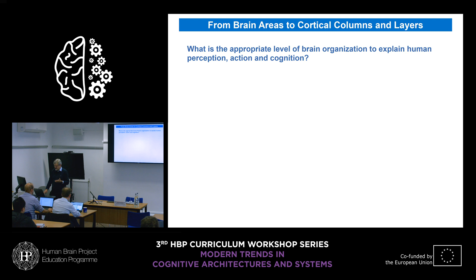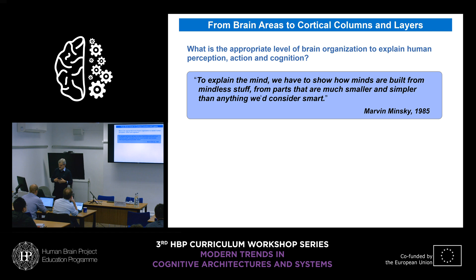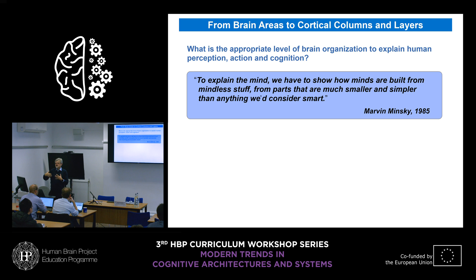This goes back to the question of what is the best or appropriate level to understand cognition and action. One of my heroes, Marvin Minsky, said in his book The Society of Mind: to explain the mind, we have to show how minds are built from mindless stuff — from parts that are much smaller and simpler than anything we would in itself consider smart. This is a critique on older psychological concepts where you explained psychological phenomena by referring to other psychological phenomena, without looking at the lower-level organization principles of the brain.